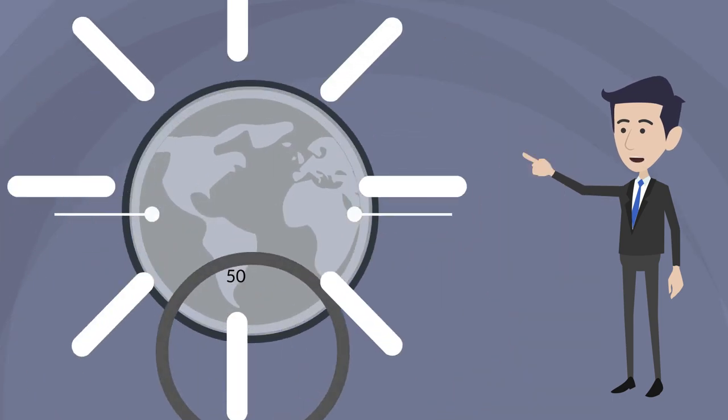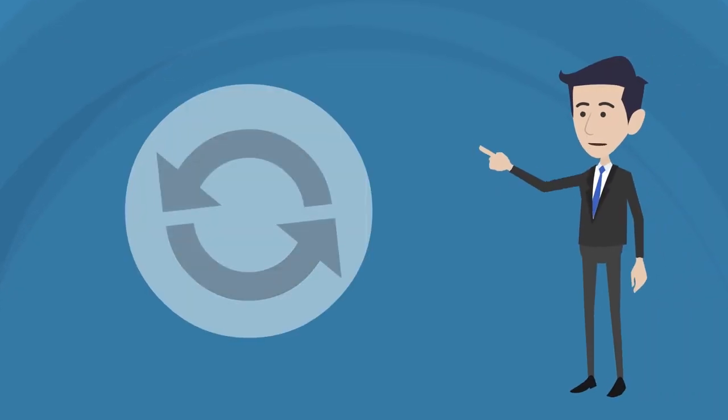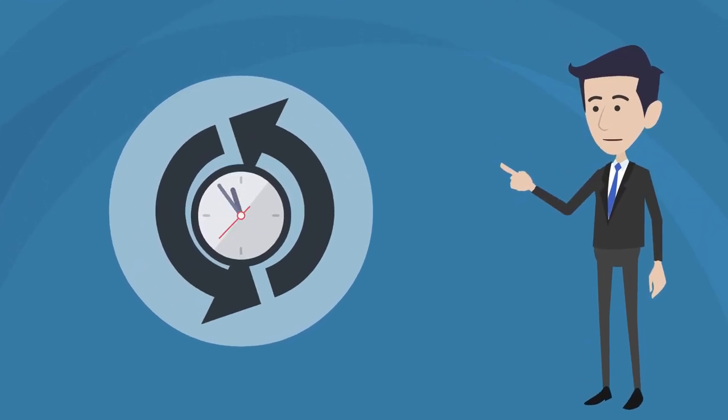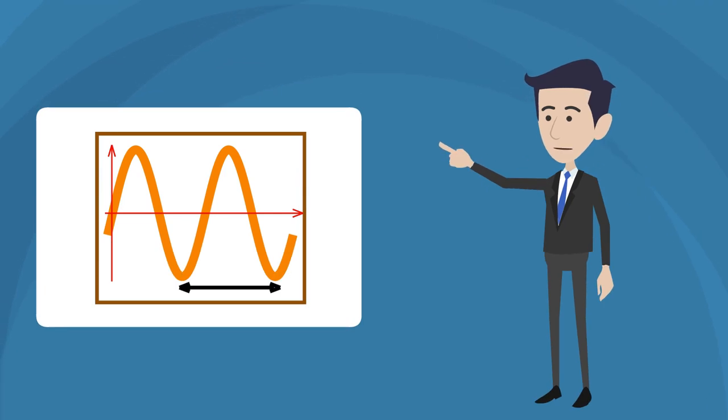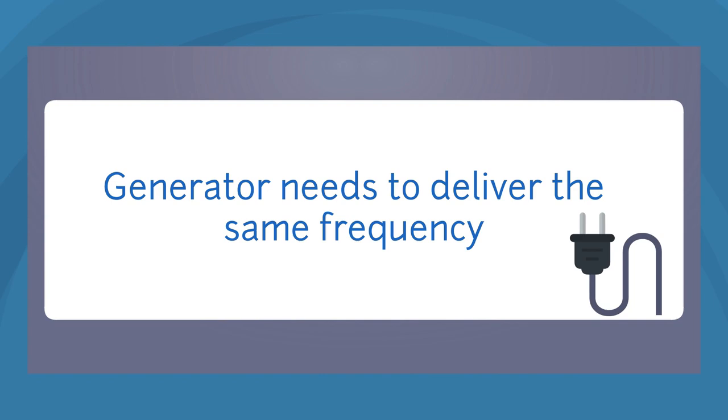AC power around the world is delivered in 50 Hz or 60 Hz. A Hz represents the number of AC power cycles per second, so 50 or 60 cycles per second. This is called the frequency. A generator needs to deliver the same frequency as your main supply.